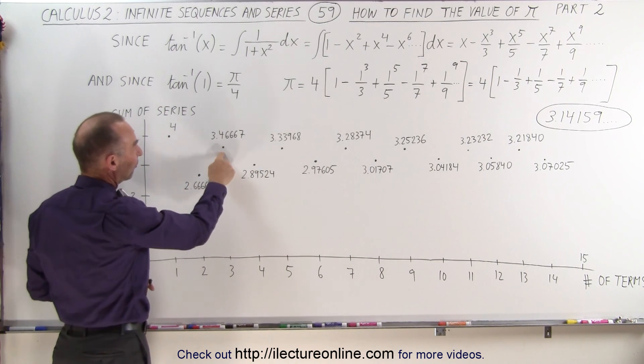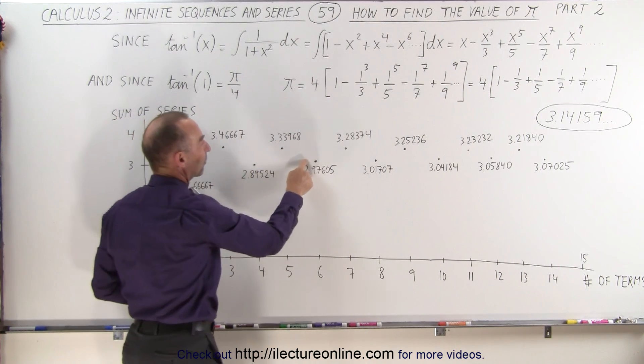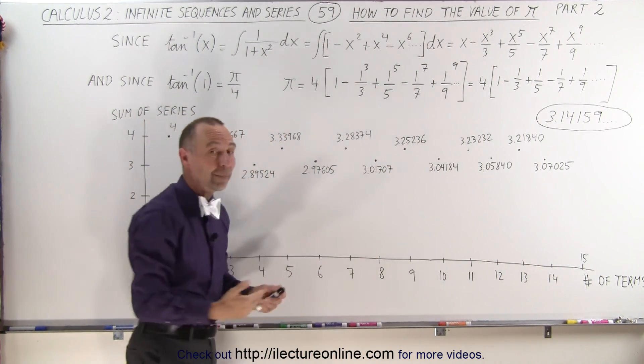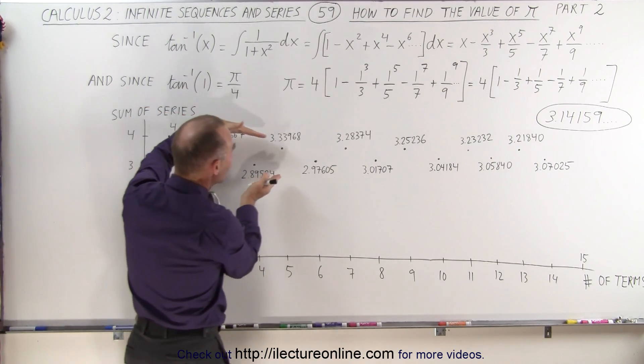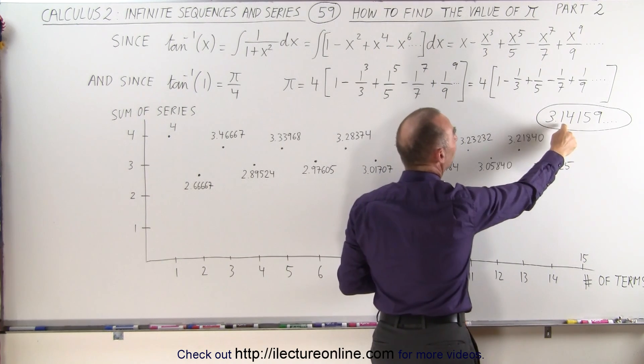Then we add to that 4 fifths, subtract 4 sevenths, add 4 ninths, subtract 4 elevenths, add 4 thirteenths, subtract 4 fifteenths, and so forth. You can see the pattern, and notice how the values continue to converge to the one value we're looking for, the number pi.